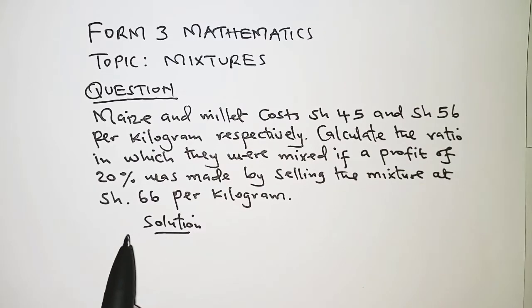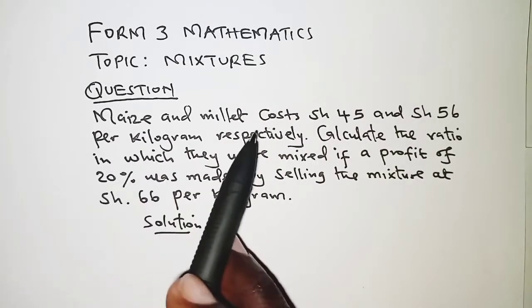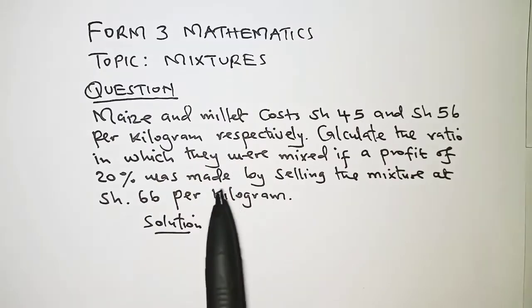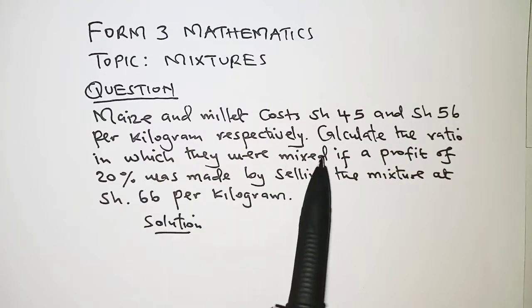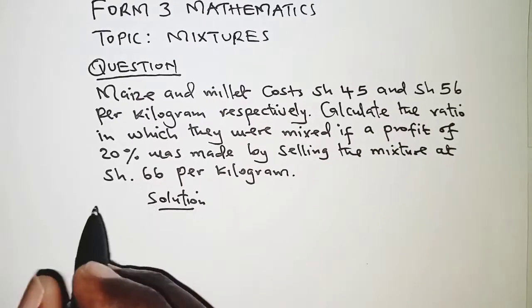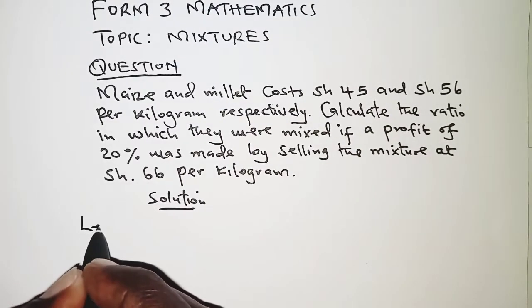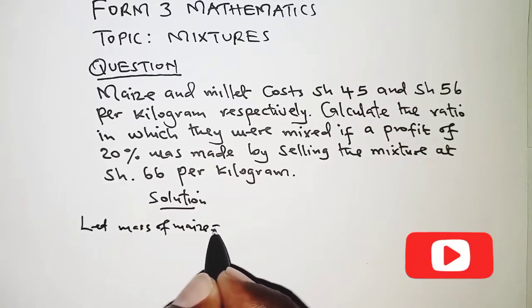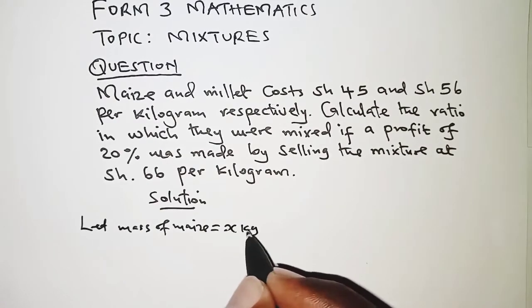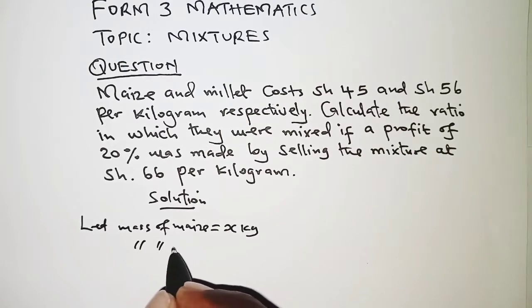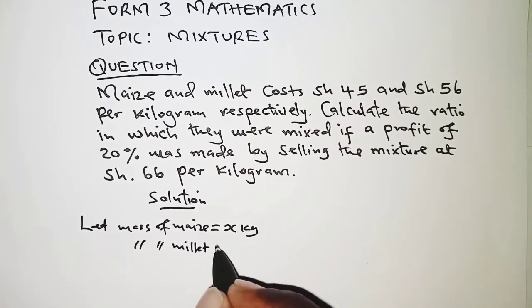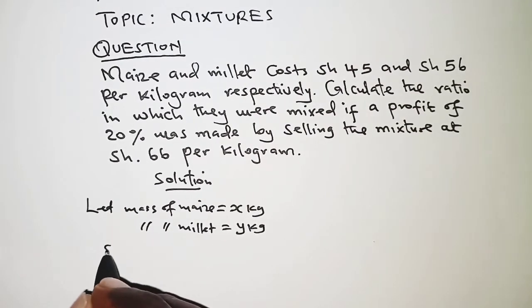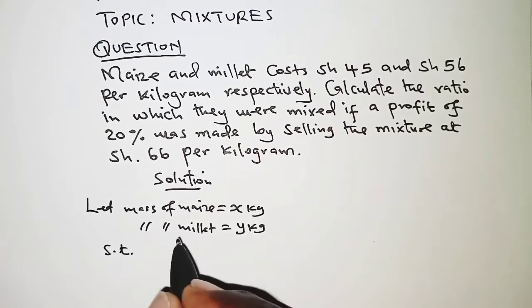We need to know that when maize and millet are mixed, the ratio by which they are mixed can be obtained by simplifying the ratios of their masses. So we will let mass of maize be x kilograms and mass of millet be y kilograms.